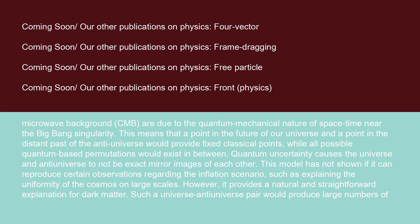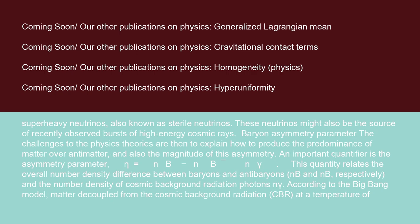Quantum uncertainty causes the universe and anti-universe to not be exact mirror images of each other. This model has not shown if it can reproduce certain observations regarding the inflation scenario, such as explaining the uniformity of the cosmos on large scales. However, it provides a natural and straightforward explanation for dark matter. Such a universe-anti-universe pair would produce large numbers of super-heavy neutrinos, also known as sterile neutrinos. These neutrinos might also be the source of recently observed bursts of high-energy cosmic rays.